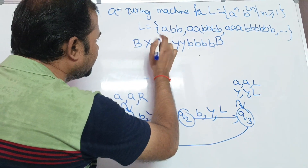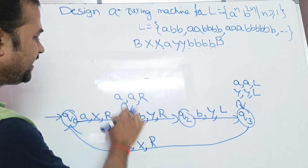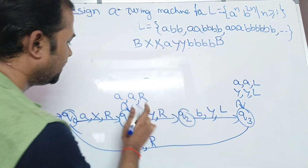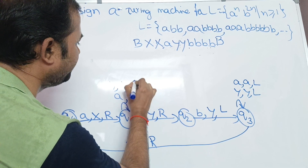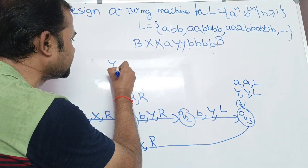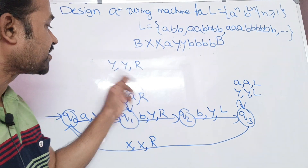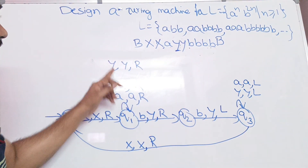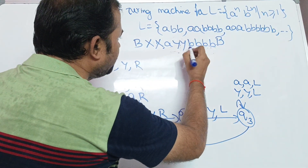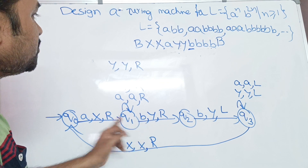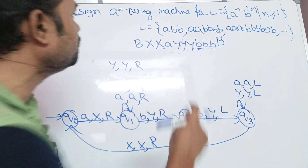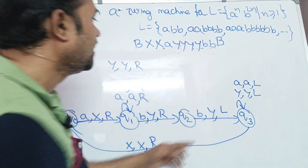A on Q0 means it will be replaced by X. A on Q1 means stay at Q1 only. We also need a self-loop: Q1 on Y means keep Y but move the head towards the right. So Q1 on Y: Y, move right. Then B on Q1 is replaced by Y and move right. B on Q2 is replaced by Y and move left. We also add the Q1 self-loop for Y: Y/R.